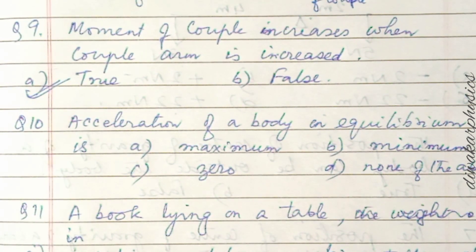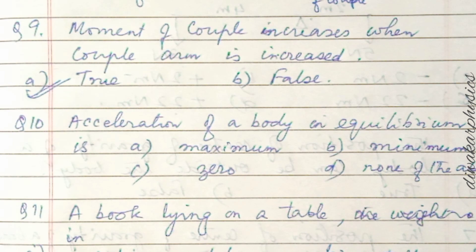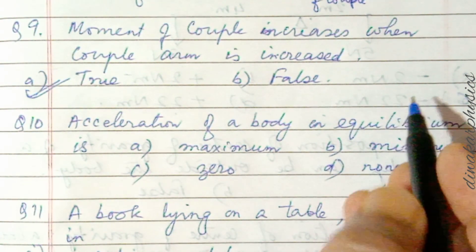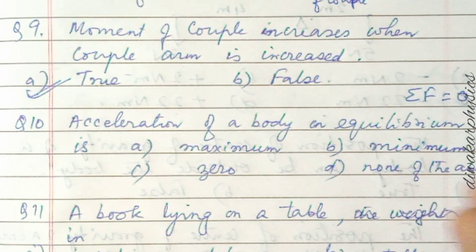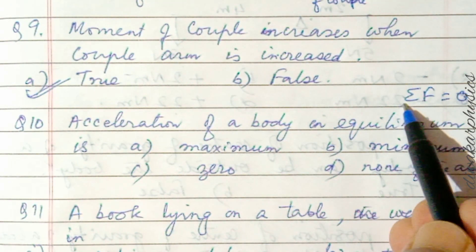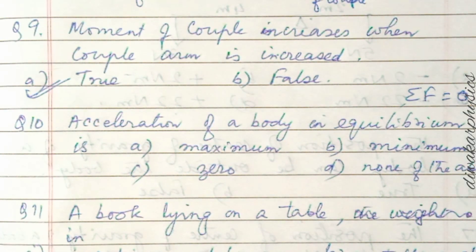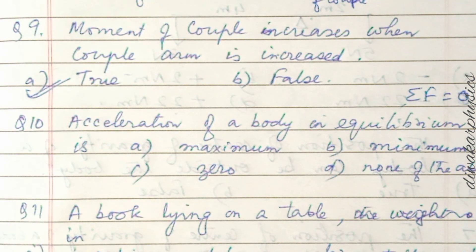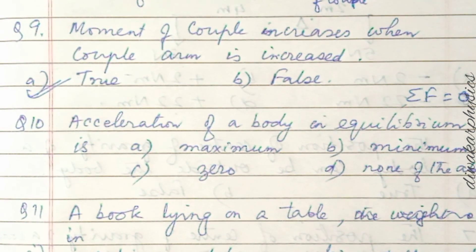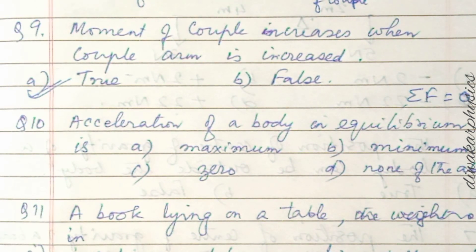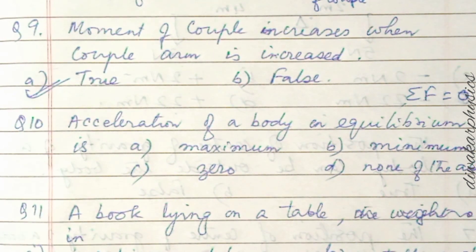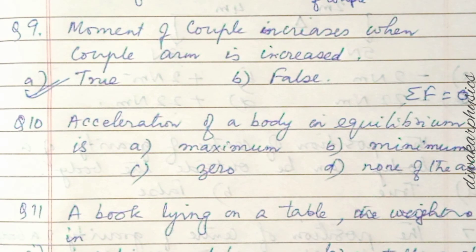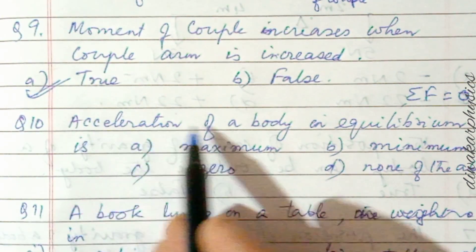Question ten: acceleration of a body in equilibrium is — maximum, minimum, zero, or none of the above? During equilibrium the net force is zero, and as there is no net force there is no acceleration. The body either moves with constant velocity or remains at rest. Even in dynamic equilibrium there is no change in speed, so acceleration is zero.